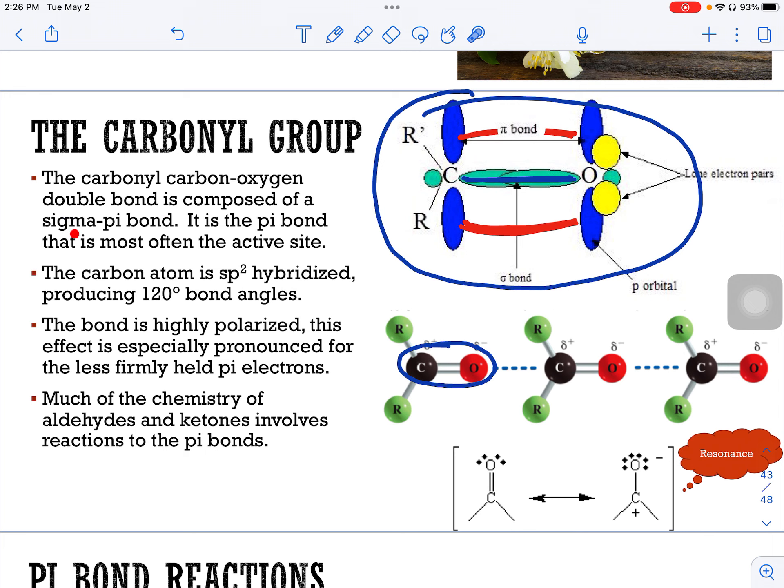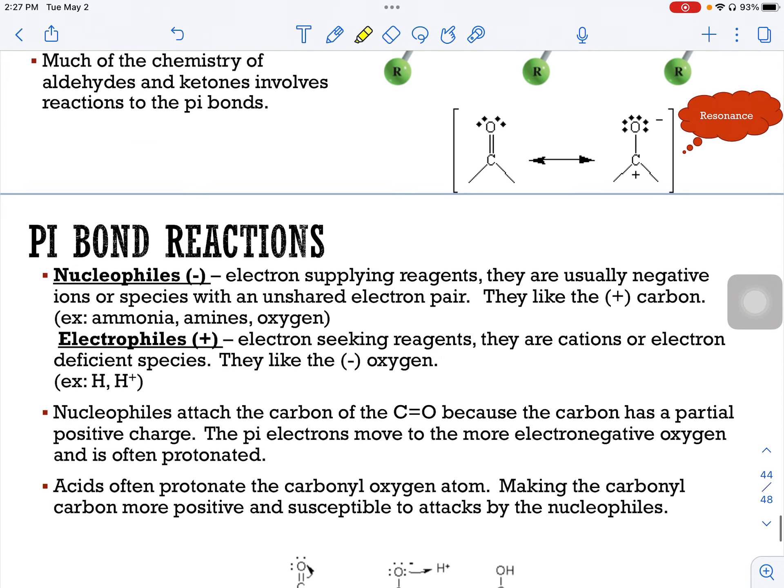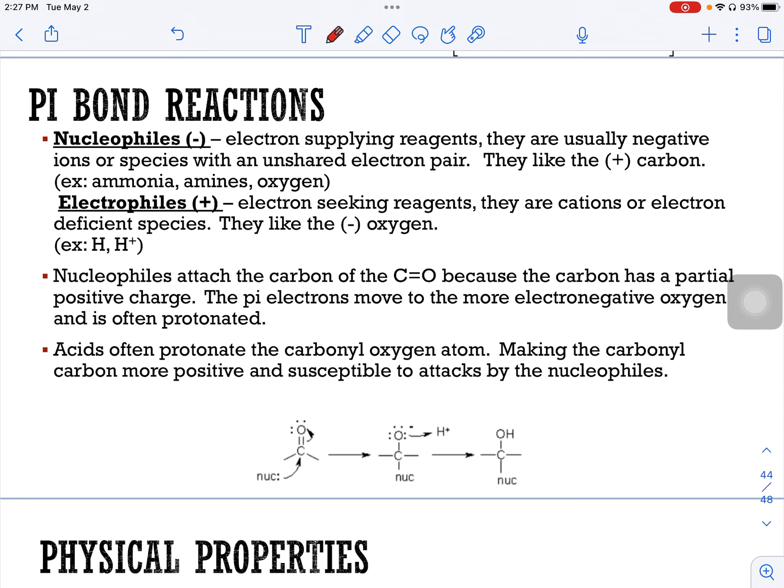So it's a double bond composed of a sigma pi bond. And the pi bond is the one that is more active to breaking open. The carbon atoms are sp2 hybridized, which is going to make this 120 degree bond angle. So right here, here, and here, that's that 120 degree bond angle. The bond is highly polarized. And this effect is especially pronounced for the less firmly held pi electrons. That's again, these guys. So they're what makes it so polar. And much of the chemistry of aldehydes and ketones involve reactions that attack these pi bonds.